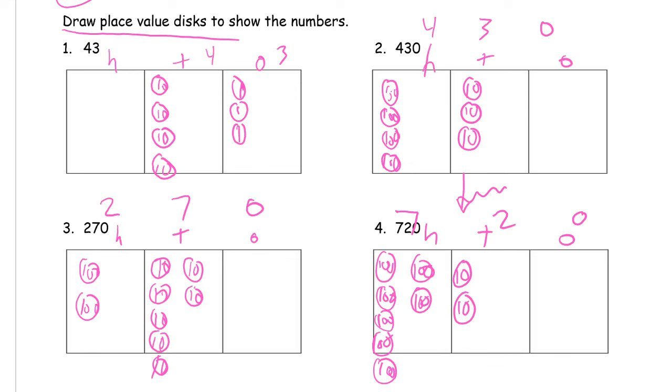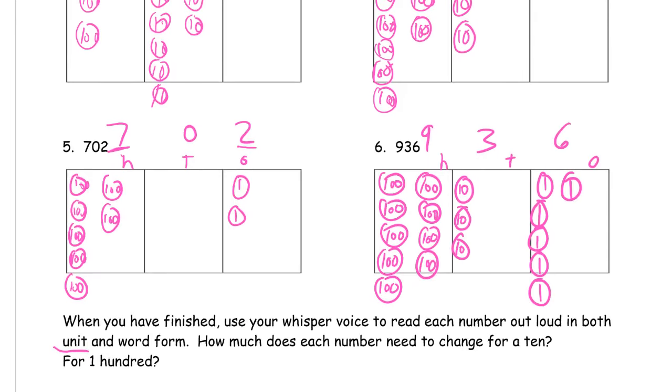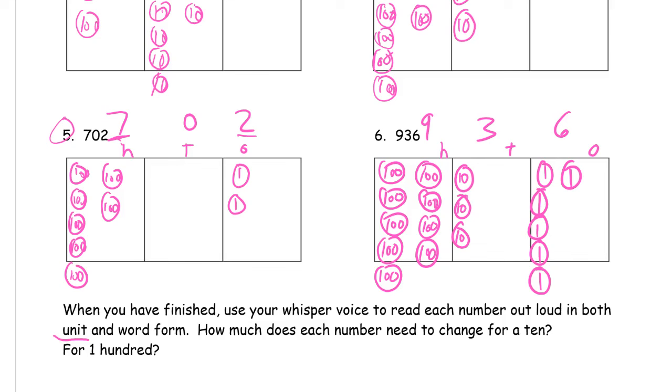So this would be four tens, three ones, forty-three. In unit form, this one is four hundreds, three tens, and then word form is four hundred thirty. This is two hundreds, seven tens, and in word form, two hundred seventy. In unit form, this is seven hundreds, two tens, and in word form, seven hundred twenty. This one in unit form is seven hundreds, two ones, seven hundred two. This one here is nine hundreds, three tens, six ones. That's unit form. Word form is nine hundred thirty-six.